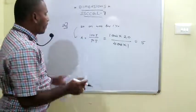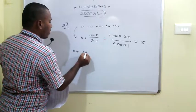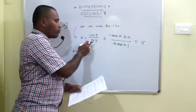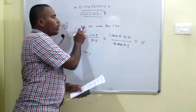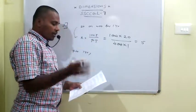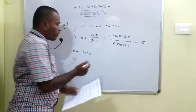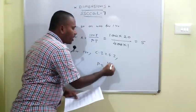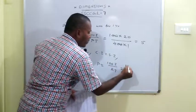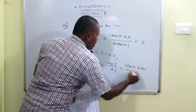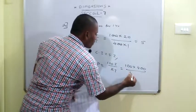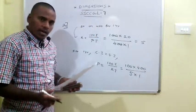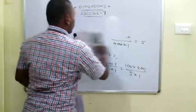Next, we calculate the principal. For the first year, the interest is 400 rupees. Using P = 100I / RT, where I = 400, R = 5, and T = 1 year, on simplification we get the principal amount as 8000 rupees. This is the 54th question.